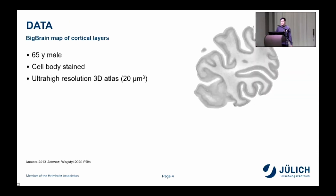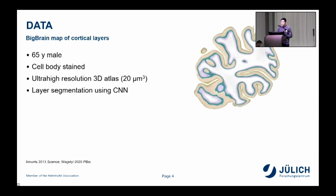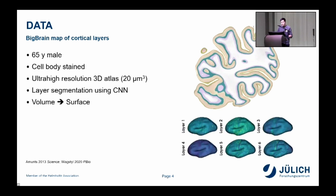The data we used was this big brain map of cortical layers. Big Brain is an ultra-high-resolution 3D atlas of histology. Recently, Carnot-Vax and colleagues segmented the cortex of this brain into the six layers, and this was then transformed to surface space. In the end, we know for each cortical location what is the thickness of each of the six layers, and this was the main input to our study.